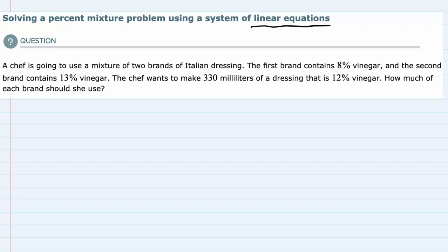In this problem, a chef is going to use a mixture of two brands of Italian dressing. The first brand contains 8% vinegar and the second brand contains 13% vinegar. The chef wants to make 330 milliliters of a dressing that is 12% vinegar. How much of each brand should he use?